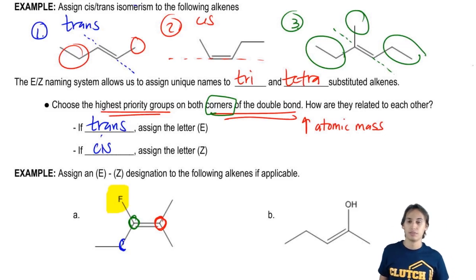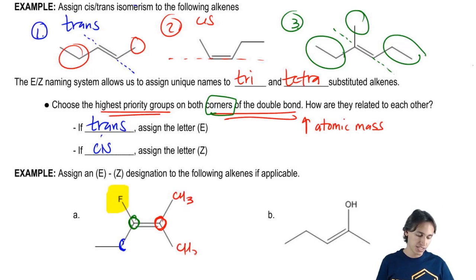Now let's move to red. So for red, is there a way to assign which one is higher priority? And actually, these are both exactly the same. They're both CH3.